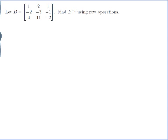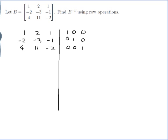Let B be this 3x3 matrix. Find B inverse using row operations. There's a particular process for doing this: put B here and the identity here and row reduce. I need to row reduce B to get the identity, and by the time I've done that, the identity will have turned into B inverse. So let's row reduce B.